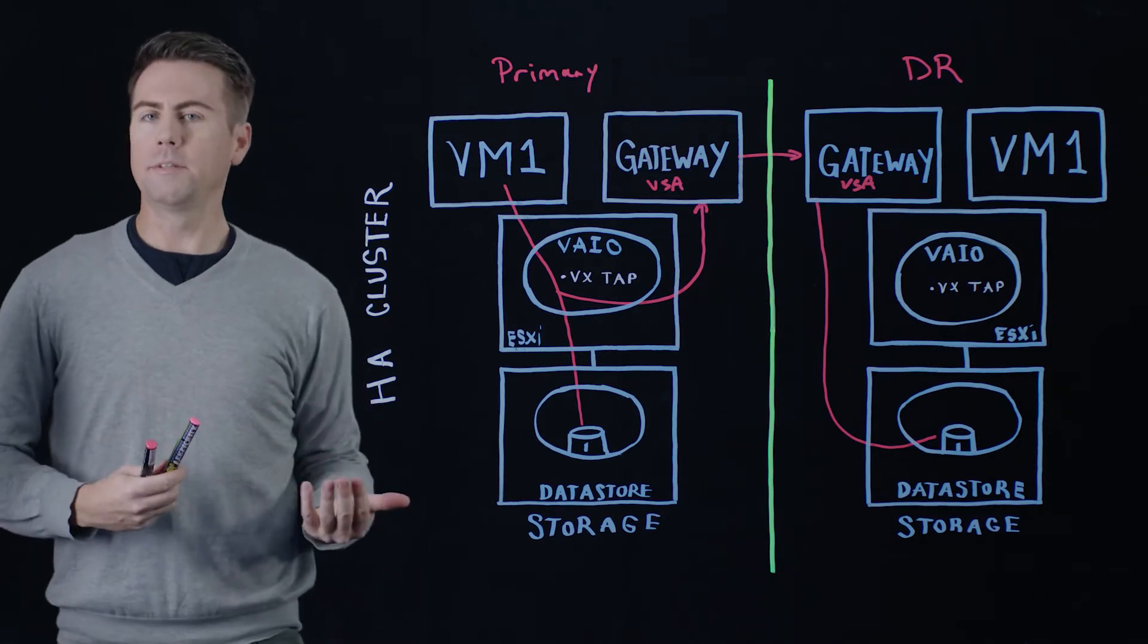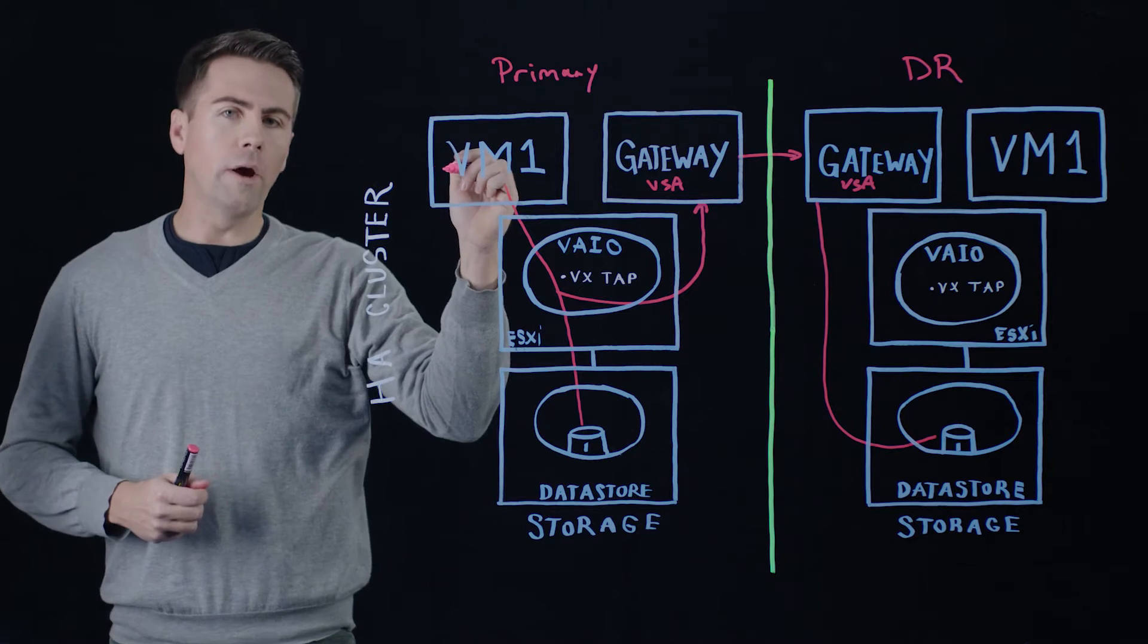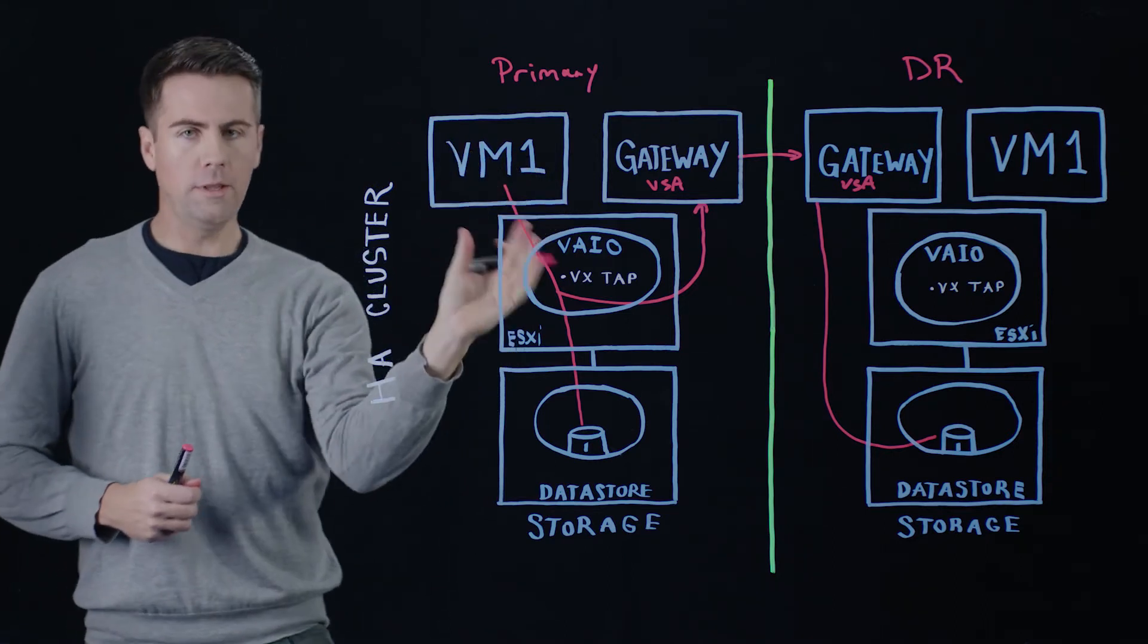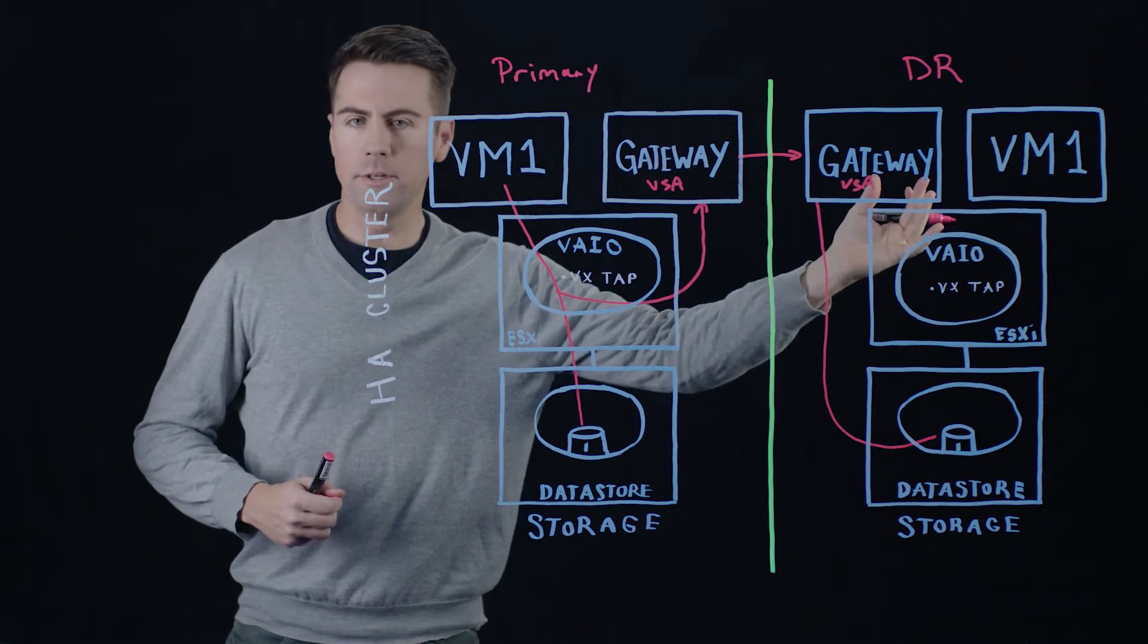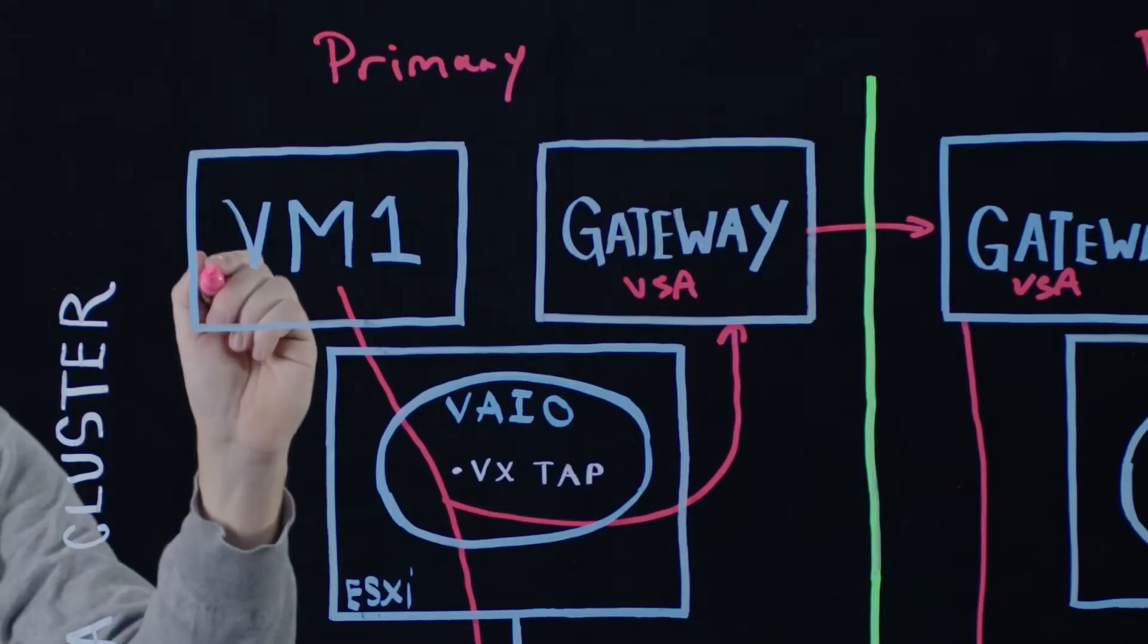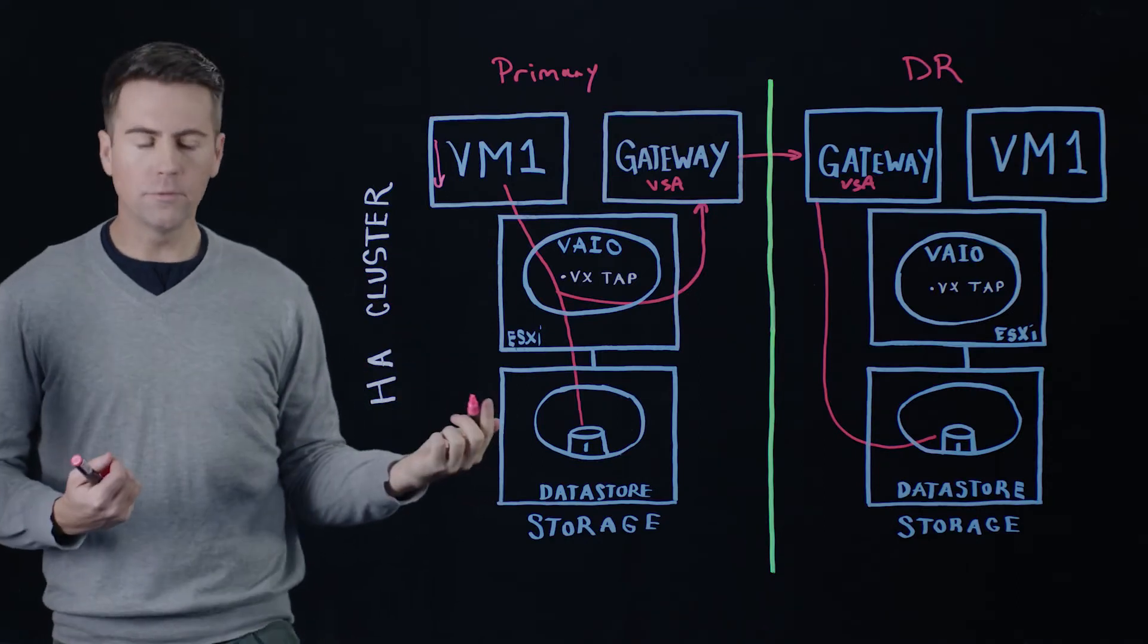So let's look at what would happen in the situation where we wanted to do a migration. So that would be a scenario where we have VM1 over here we want to bring this down on our primary site and then bring it online on our DR site. So first thing that happens is we bring VM1 down here on the primary site. This is a graceful shutdown.